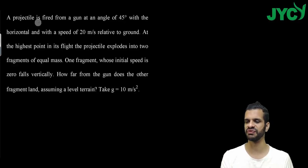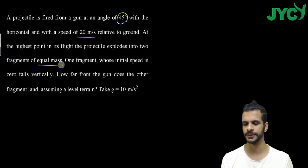A projectile is fired from a gun at an angle of 45 degrees with the horizontal. Range calculation is also very easy because the angle is 45 degrees, maximum range. And with a speed of 20 meter per second relative to ground, at the highest point in its flight, the projectile explodes into two fragments of equal mass. I mean, the mass is half.